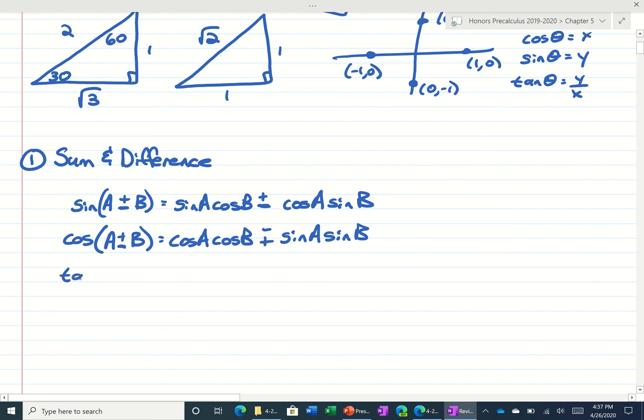And for tangents of a sum, it would be tangent of the first plus tangent of the second divided by 1, and then this bottom one's always the opposite sign.